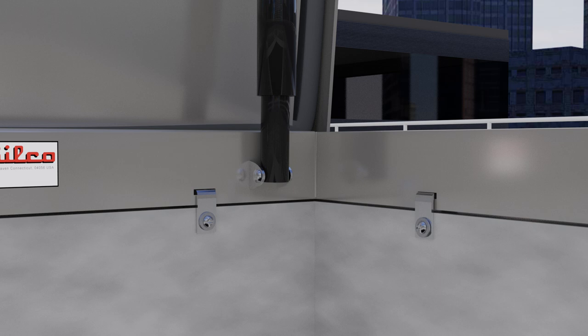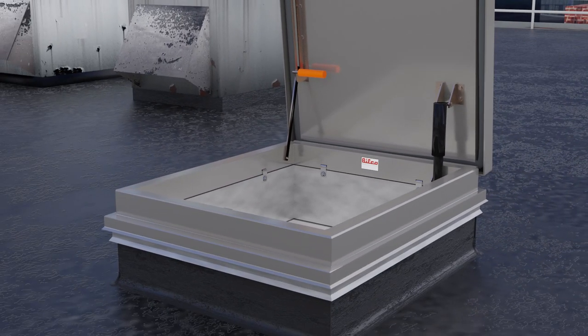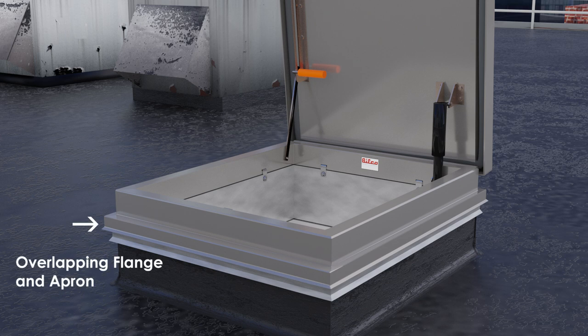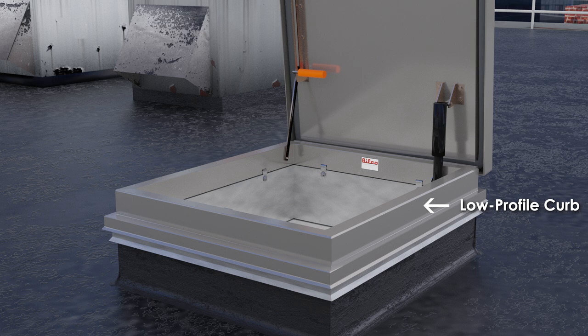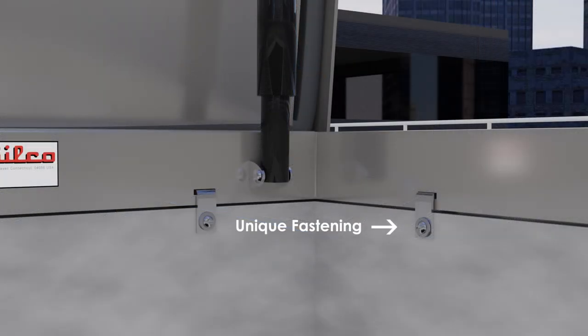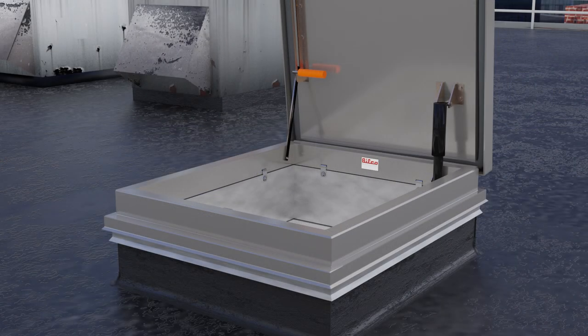Now, let's take a look at the standard features of the Versamount roof hatch. The curb features an overlapping flange and an apron designed to ensure water-tightness, and the 4-inch curb height minimizes the additional height added to the existing curb to maintain convenient and safe access. Its innovative anchor clip system ensures a fast, secure, and watertight installation.